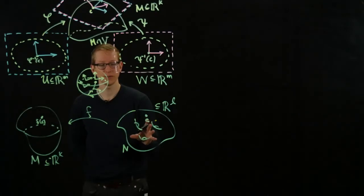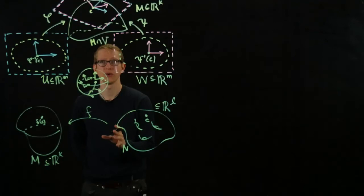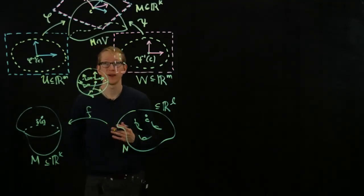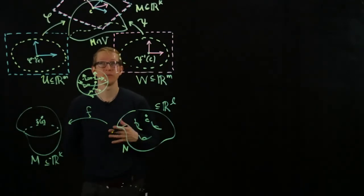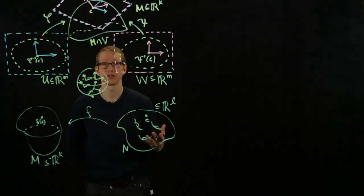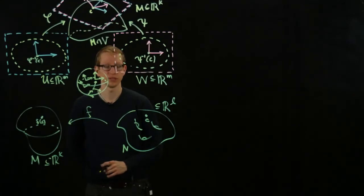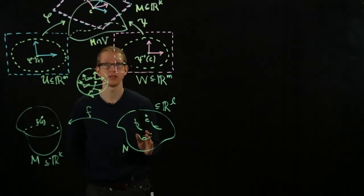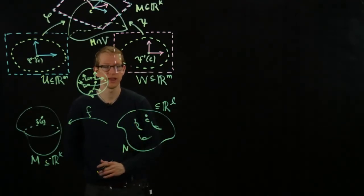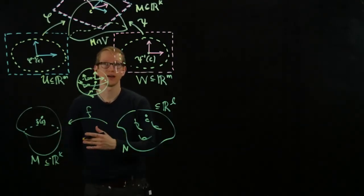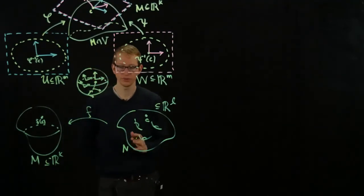However, if our subset was somewhat arbitrary, then different extensions would induce different differentials. And as a result, there might not be a unique differential, so we might not be able to actually define a differential for an arbitrary subset of Euclidean space. However, if our subset happens to be an M-dimensional manifold or an N-dimensional manifold in this case, and the target space is also some manifold, then we can define a notion of a differential.